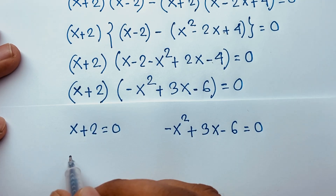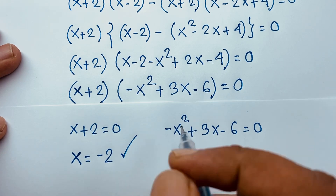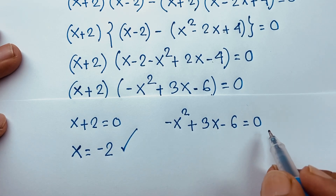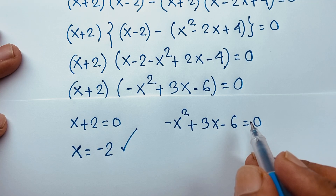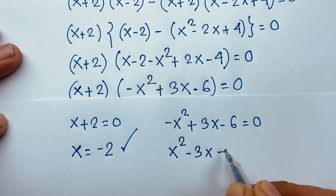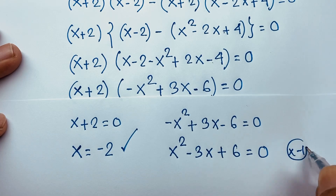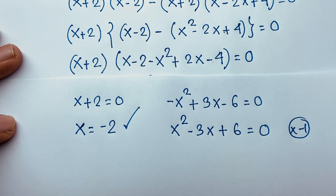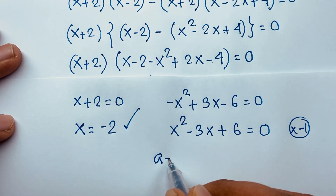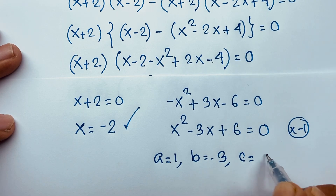From the first case: x plus 2 equals 0, so x equals negative 2. For the other case, multiplying both sides by negative 1 gives x squared minus 3x plus 6 equal to 0. This is a nice quadratic equation where a equals 1, b equals negative 3, and c equals 6.